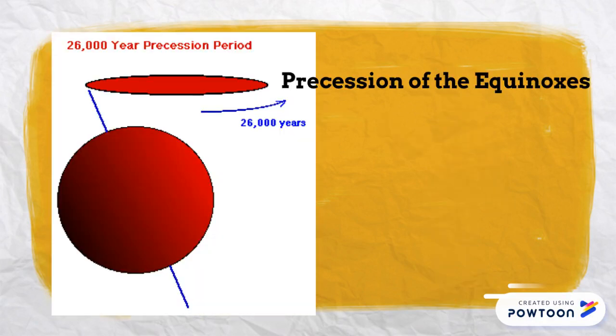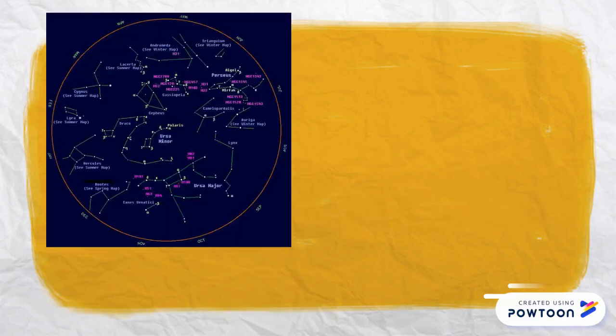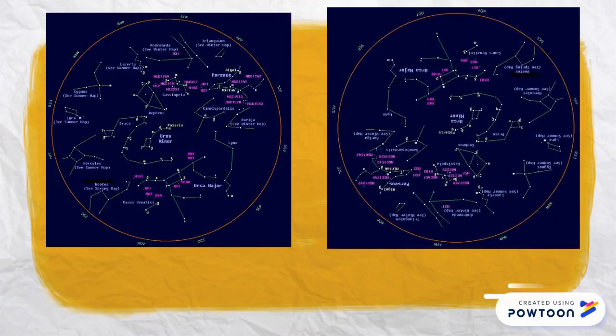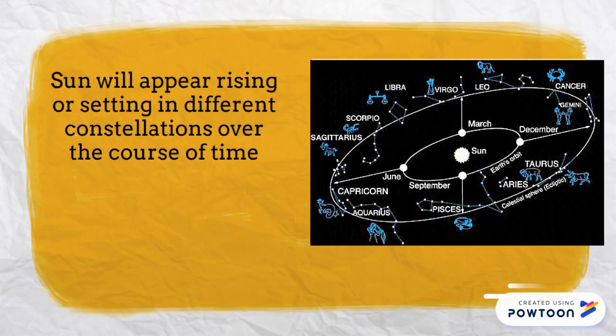which refers to the rotation of the heavens, over time the constellations appear to slowly rotate around the earth, meaning the sun will appear rising or setting in different constellations over the course of time.